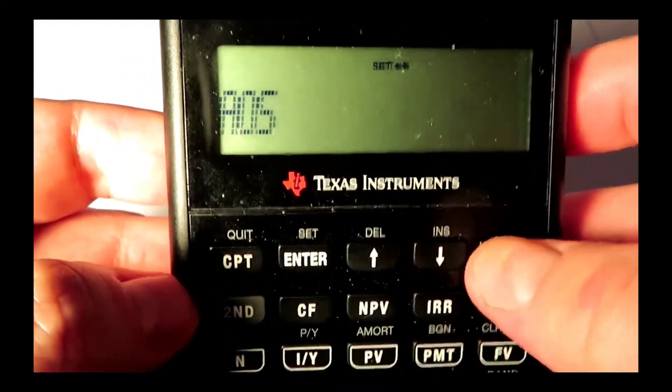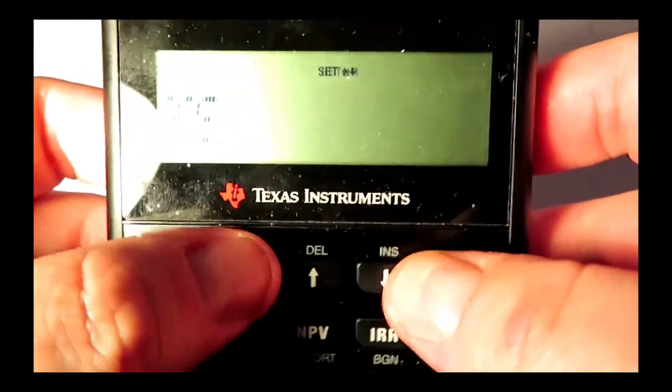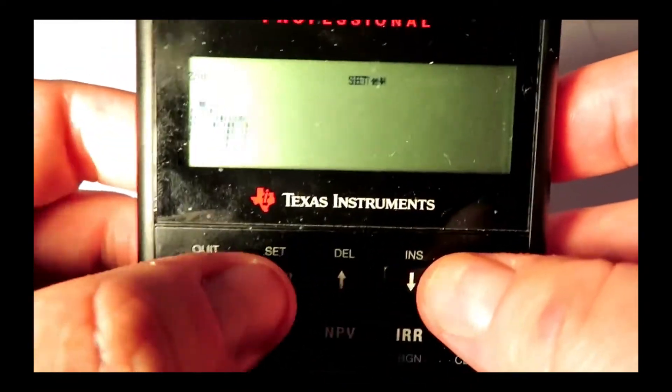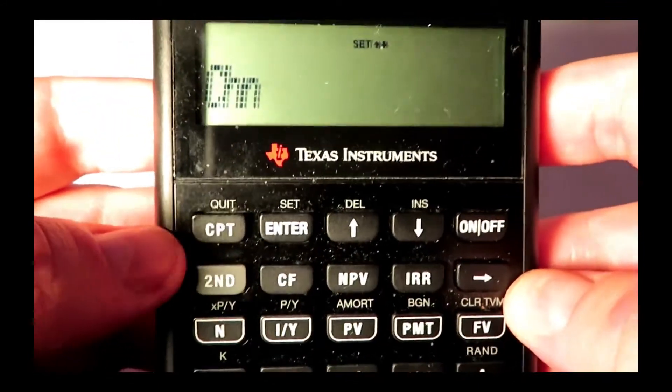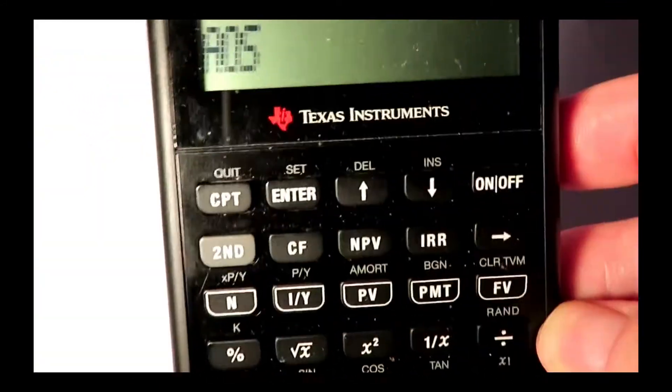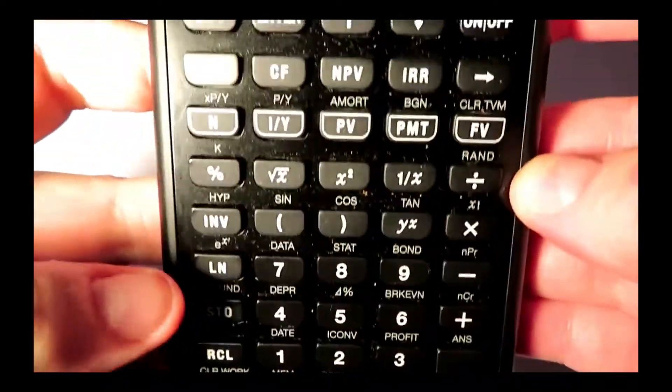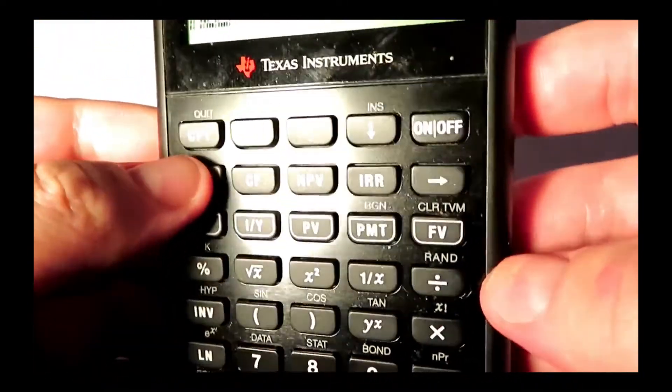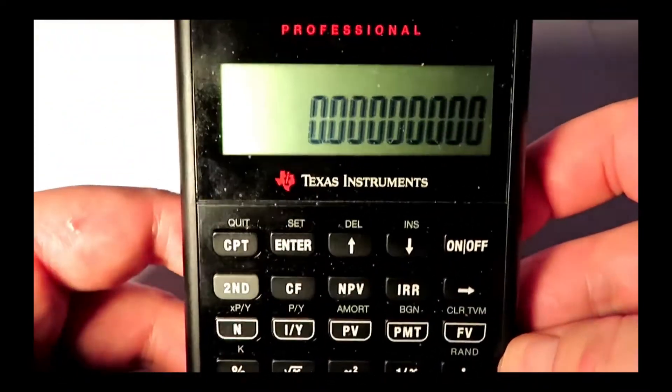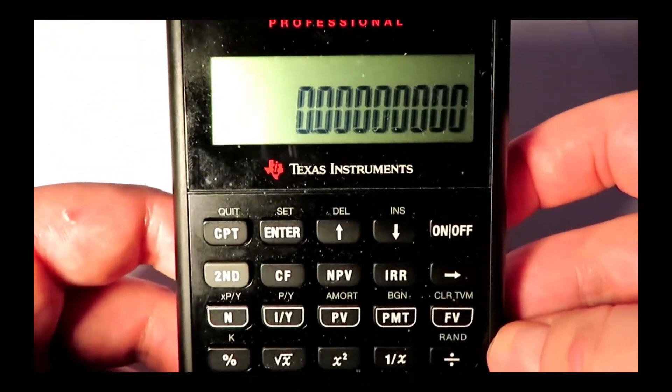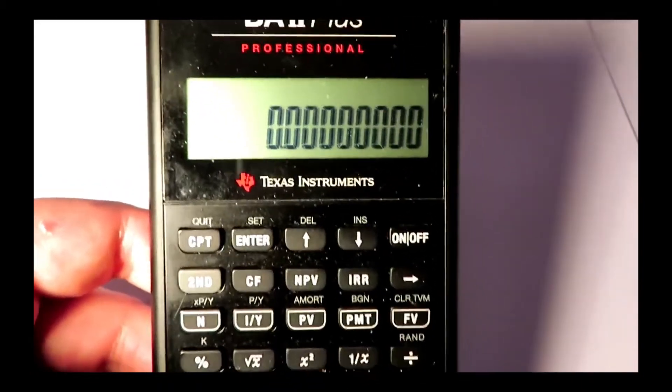And then the final choice is AOS, or chain mode. And that just sorts out your order of operations when you're typing in equations. And then to get out of there, clear our work with CEC, and we're back to our workspace. And there were the other settings you can set in the format menu.